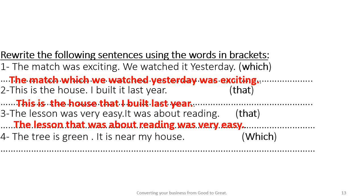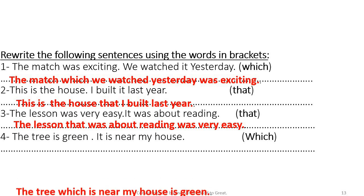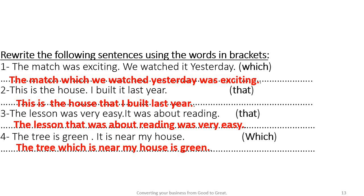Number three: 'The lesson was very easy. It was about reading.' Use that — we get: 'The lesson that was about reading was very easy.' Number four: 'The tree is green. It is near my house.' Use which — we get: 'The tree which is near my house is green.'